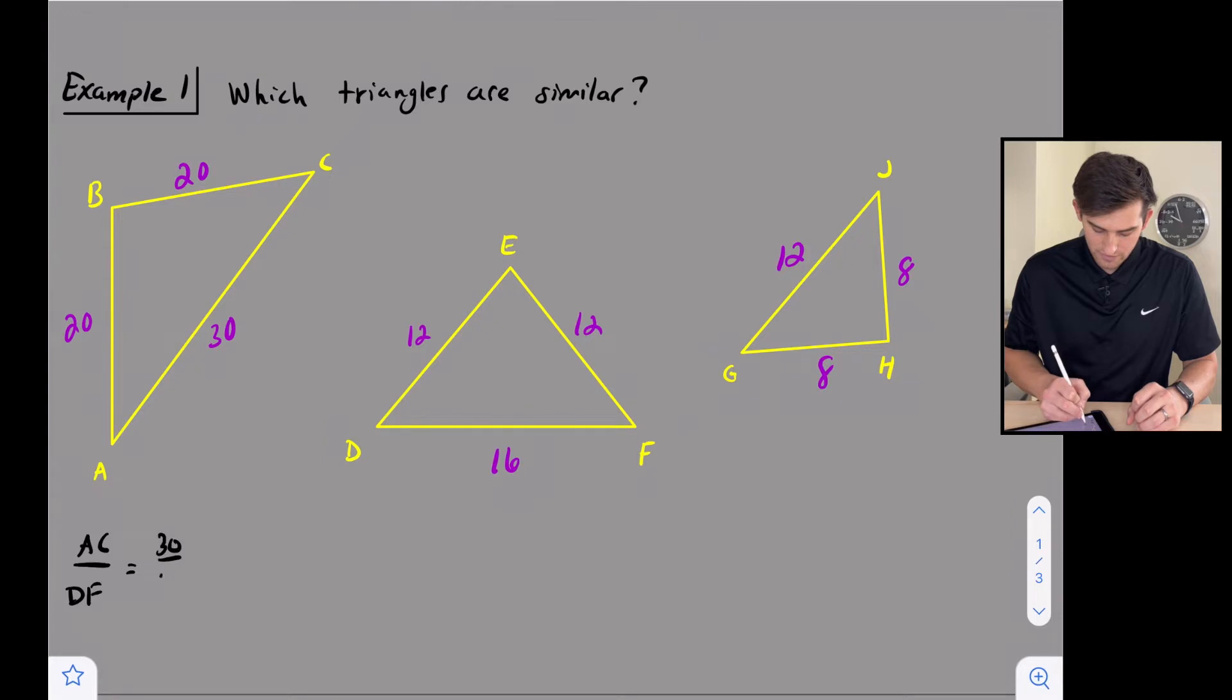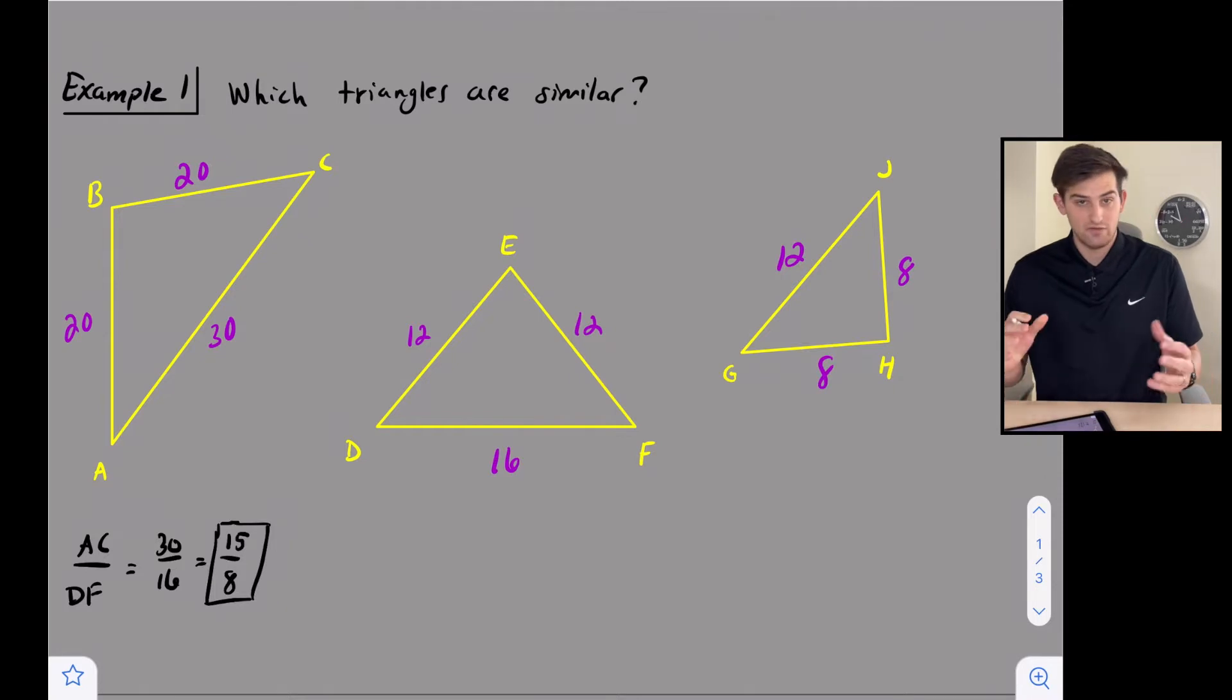So that would be 30 over 16. We can reduce that a little bit - let's divide both of those by two and we get 15 over 8. So let's focus on 15 over 8 for right now. Now let's look at two of the other sides. Compare them - if their ratio is also 15 over 8, then we know we're proportional.